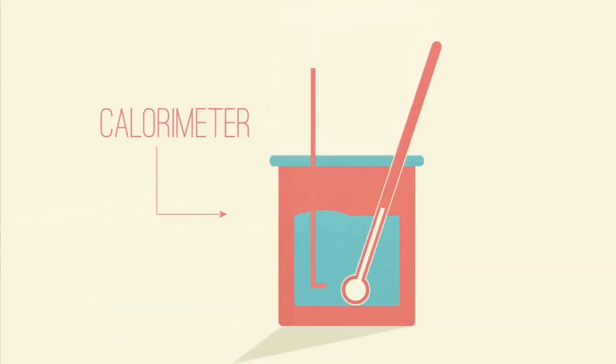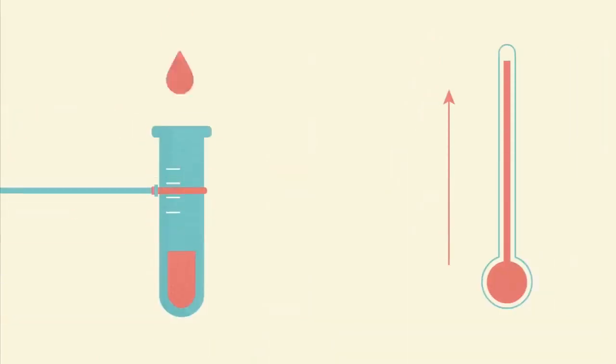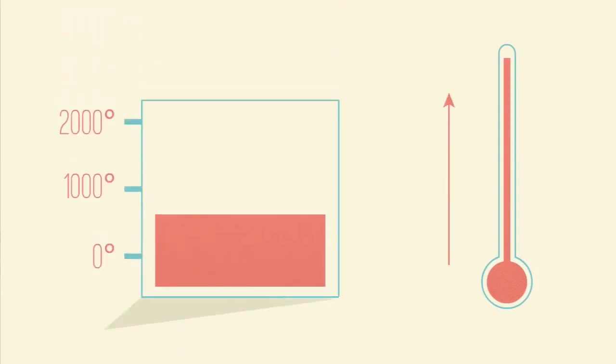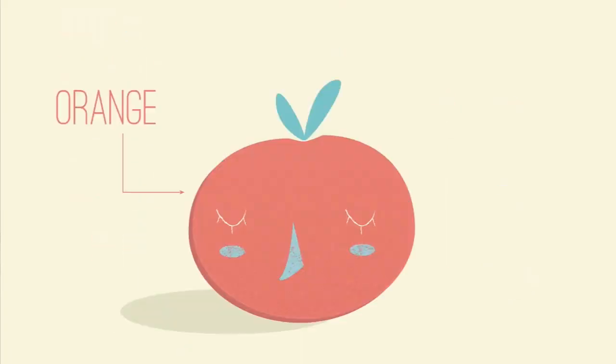A calorimeter is a device used for calorimetry, the process of measuring the change in heat of chemical reactions or physical changes, as well as heat capacity for a material.